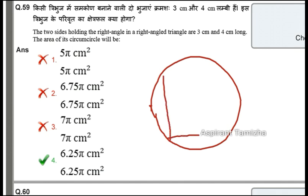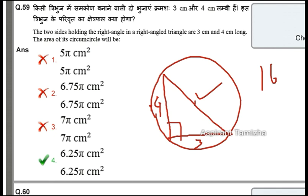This is a triangle. The midpoint is on the opposite side. One side is 4 and the other is 3, so this is the diameter. 4 squared is 16 and 3 squared is 9.